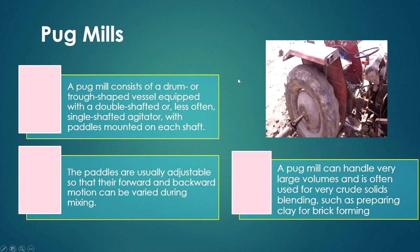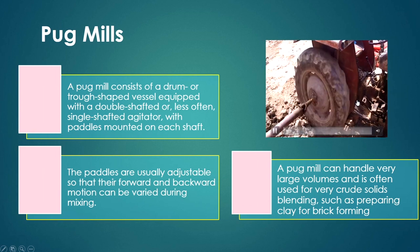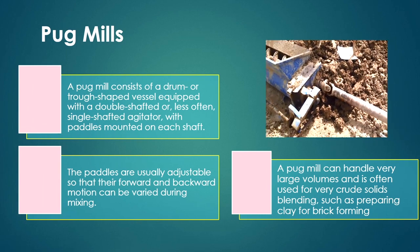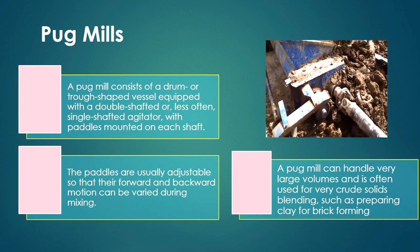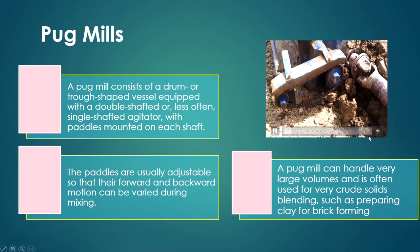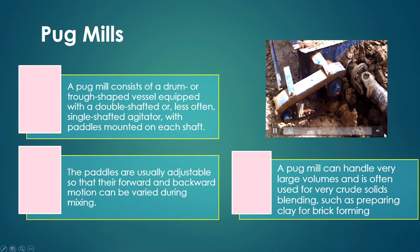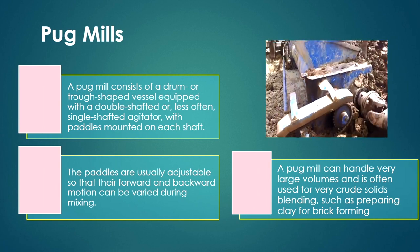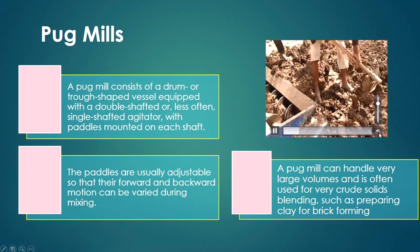A pug mill consists of a drum or trap-shaped vessel equipped with a double-shafted or single-shafted agitator with paddles mounted on each shaft. The paddles are usually adjustable so that their forward and backward motion can be varied during mixing. A pug mill can handle very large volumes and is often used for crude solids blending, such as preparing clay for brick formation.